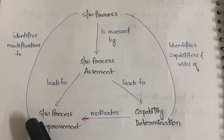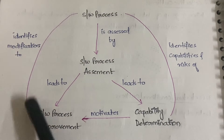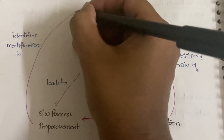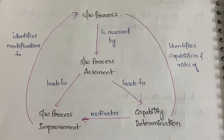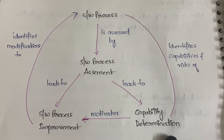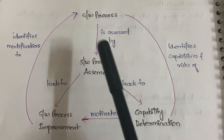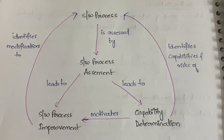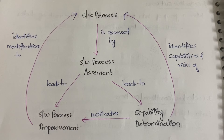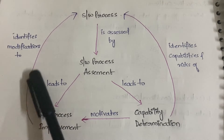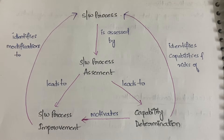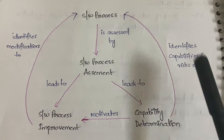Software process improvement identifies the modifications that are to be done to the software process. Capability determination identifies the capabilities and the risks associated with the software process. So when you assess a software process using software process assessment, you get two outputs: software process improvement, which tells you what modifications are needed, and capability determination, which identifies capabilities and risks associated with the software process.